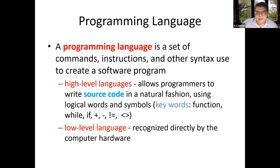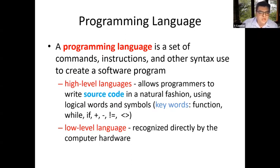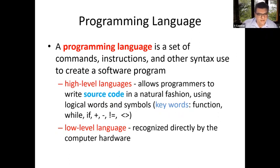We can split programming languages into different types and levels. We can recognize high-level languages or low-level languages. High-level languages allow programmers to write source code in a natural fashion, using logical words and symbols — keywords like function, while, if, or symbols like plus, minus, or non-equal. Low-level languages are recognized directly by the computer hardware, which can recognize zeros and ones, and low-level languages are based on zeros and ones.